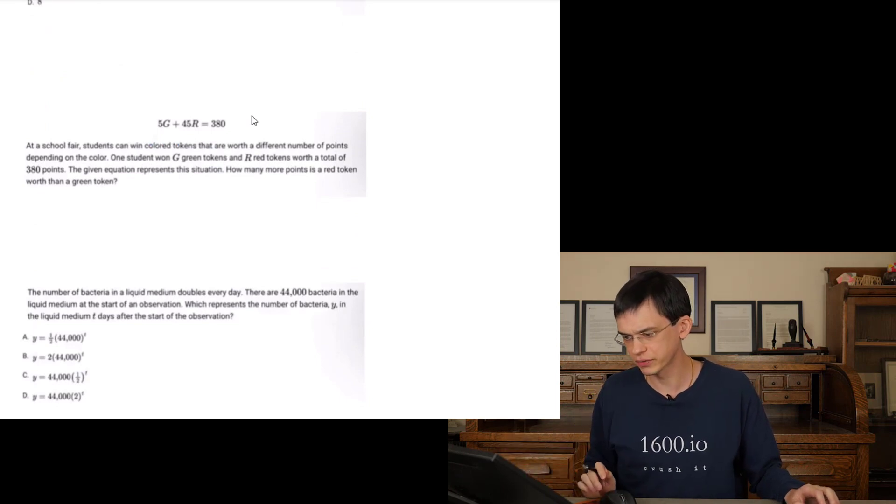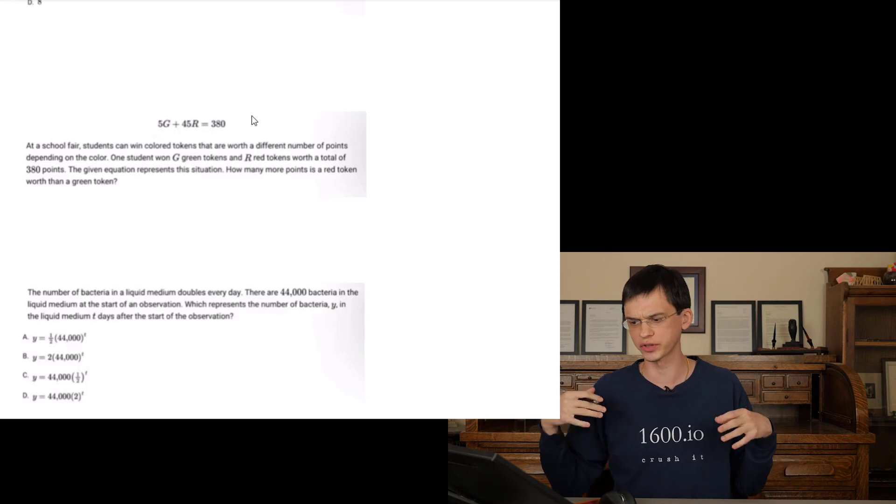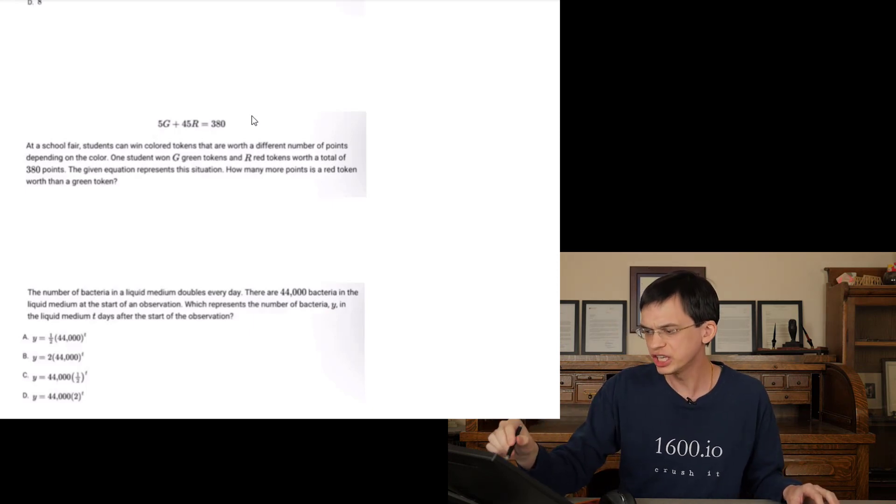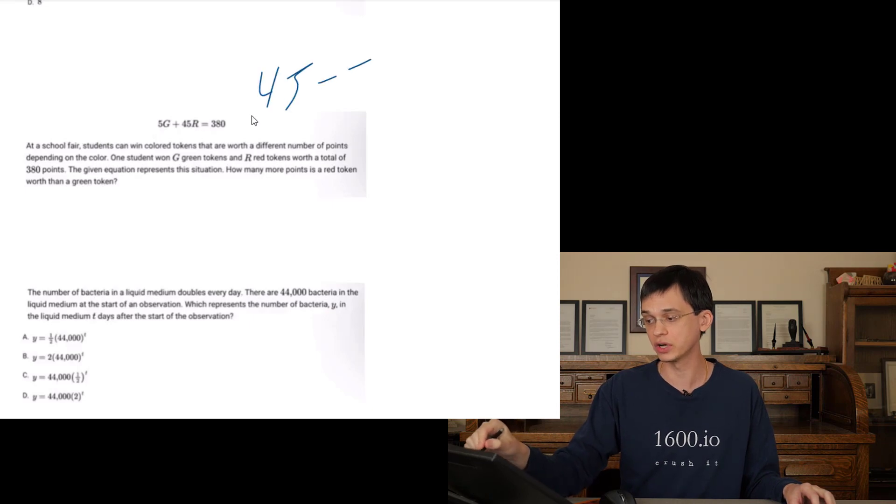So we have this linear relationship here in standard form. School fair tokens, one student, one G green tokens, R red tokens worth a total of 380 points. So if G and R represent the number of tokens, that means that 5 and 45 represent the number of points per token. So when they're asking how many more points is a red token worth than a green token, a red token is 45, a green token is 5, 40. That's our answer.